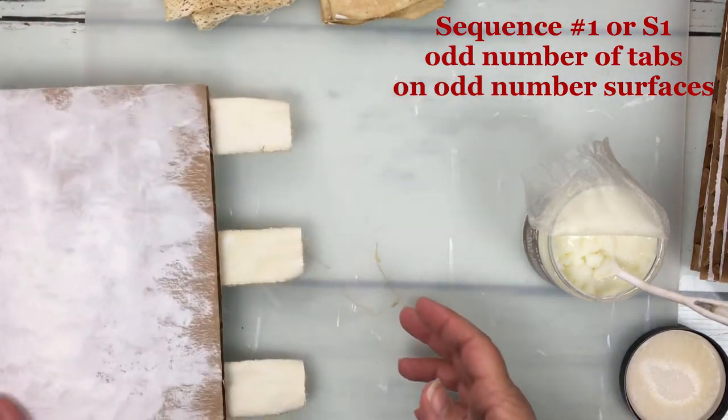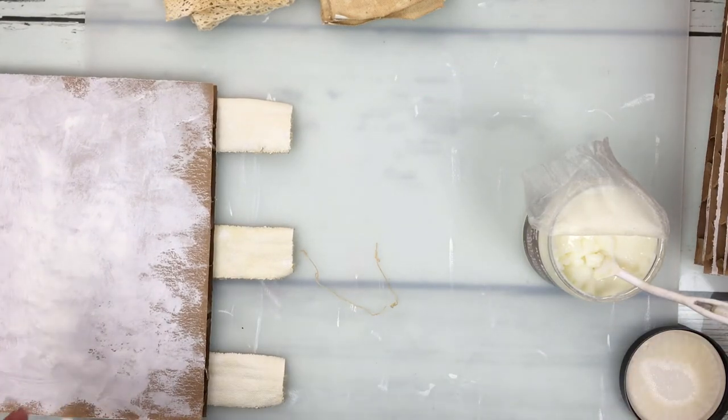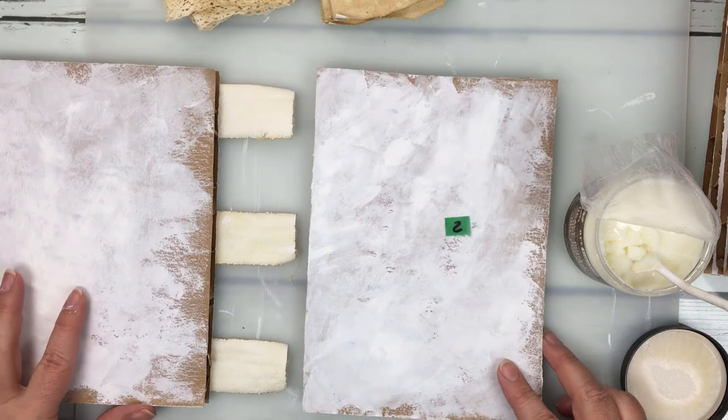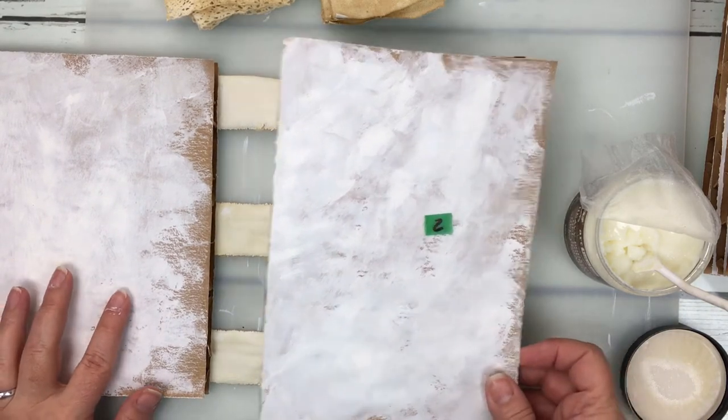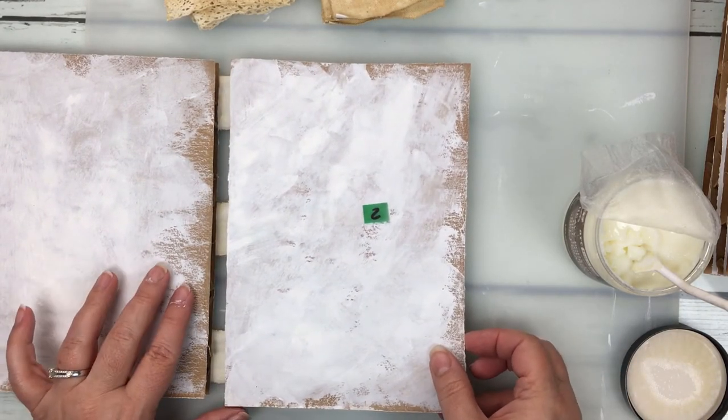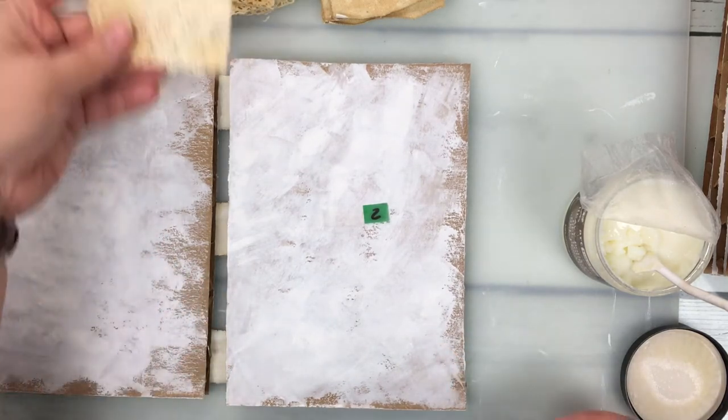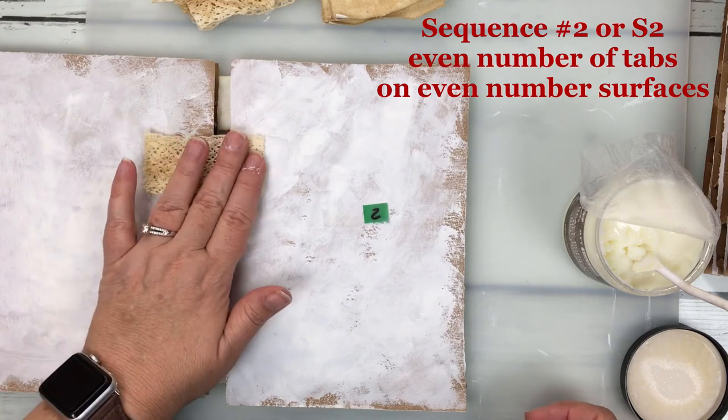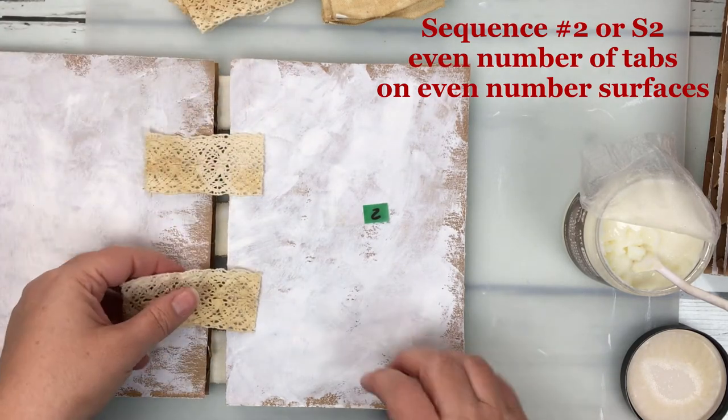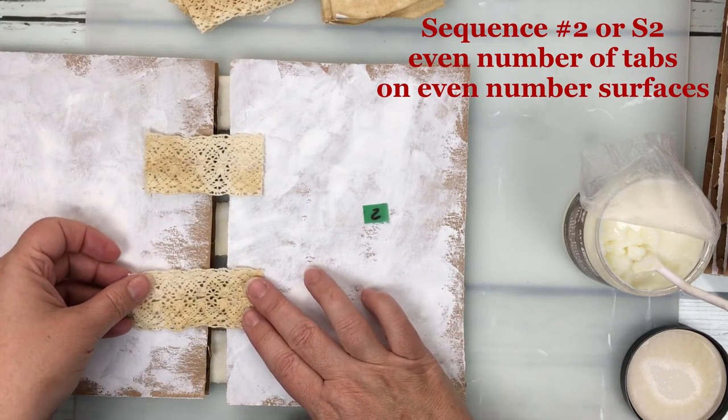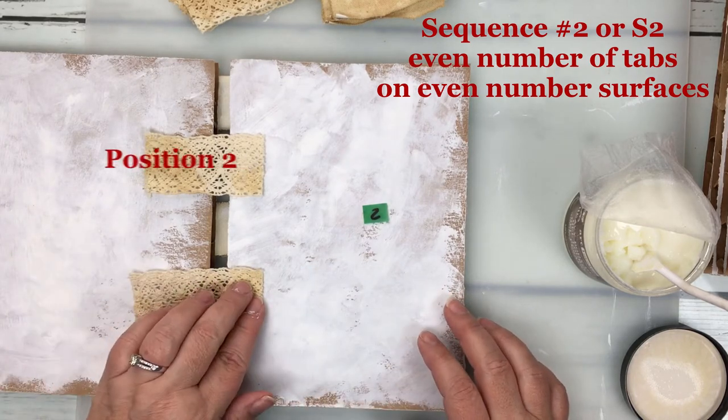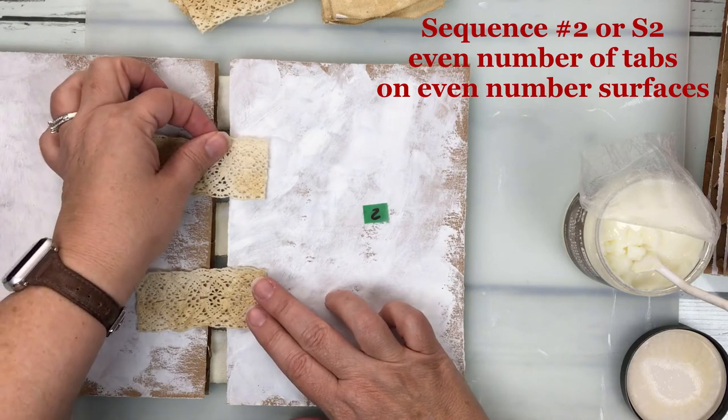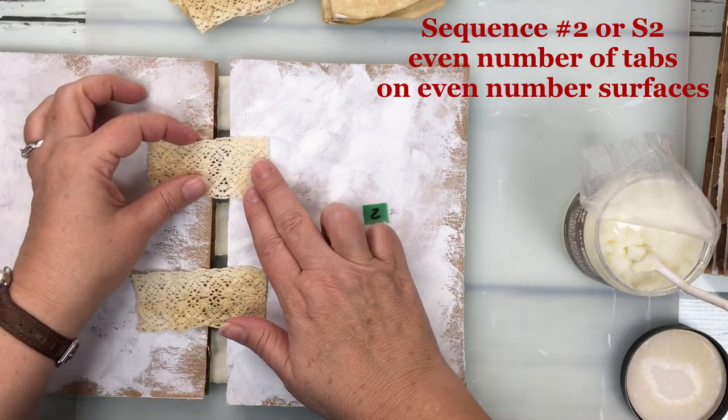Our first surface is done and we're moving on to our second surface. We are going to change it up a little bit. We're going to be using the lace in our sequence two. First I am kind of positioning it to see how it's going to fit in with those other tabs. My sequence position two or S2 tabs are in positions two and four on my even number of surfaces: two, four, six, etc.